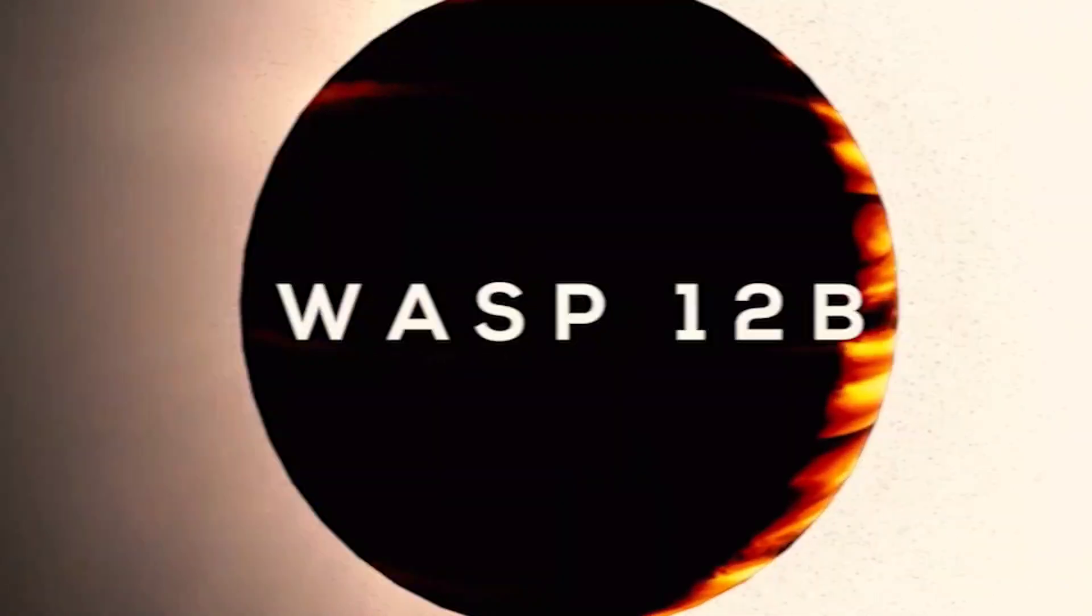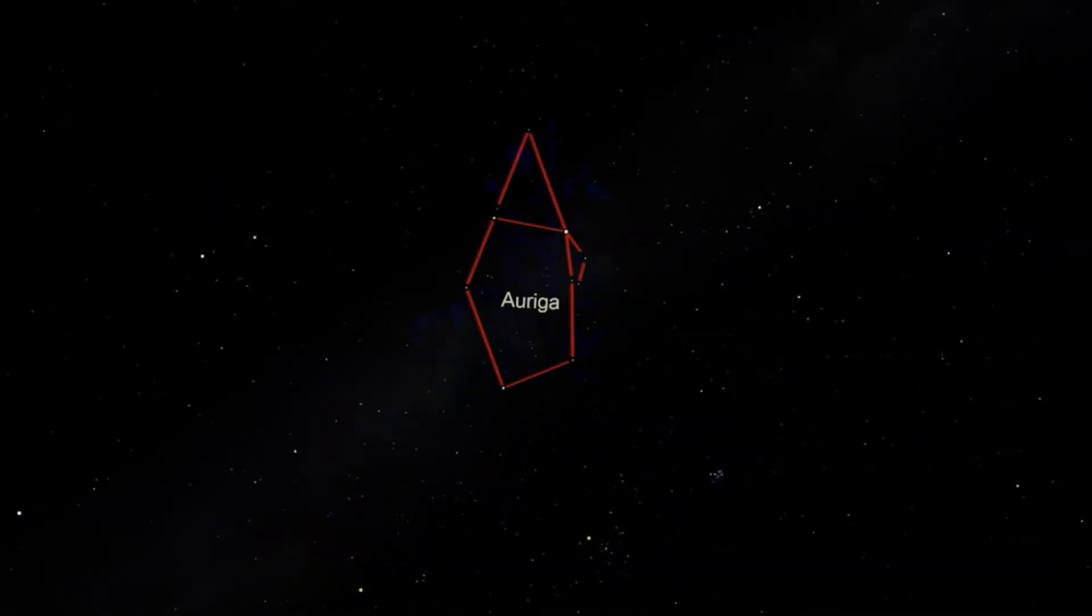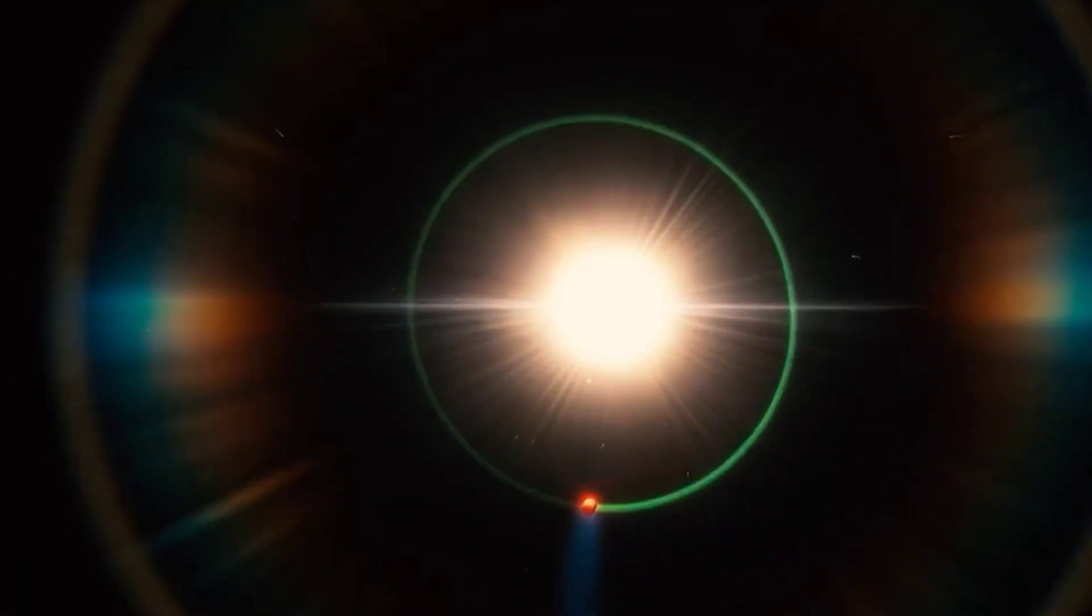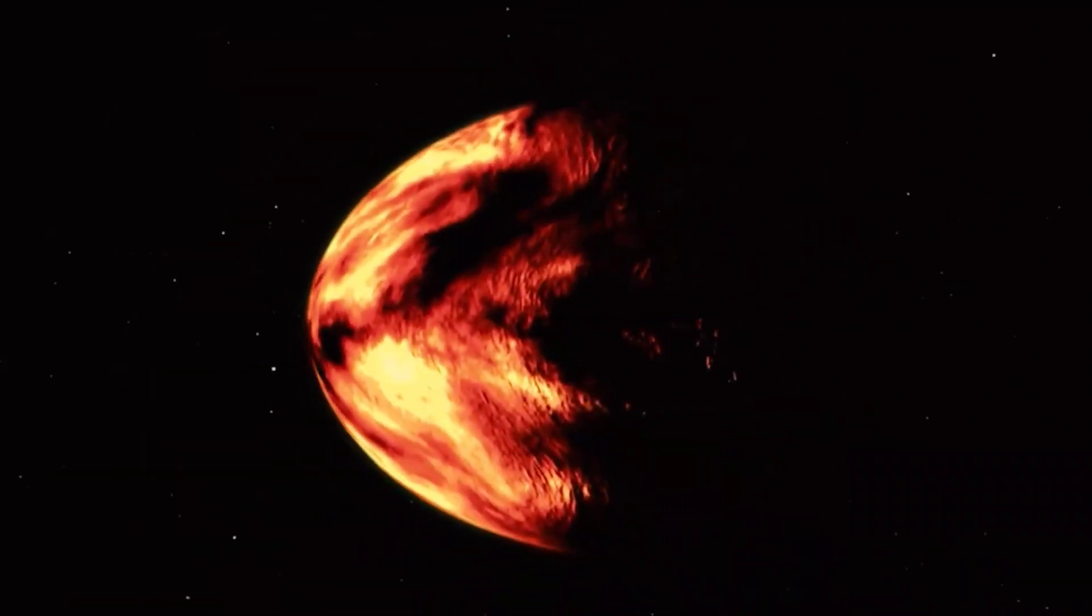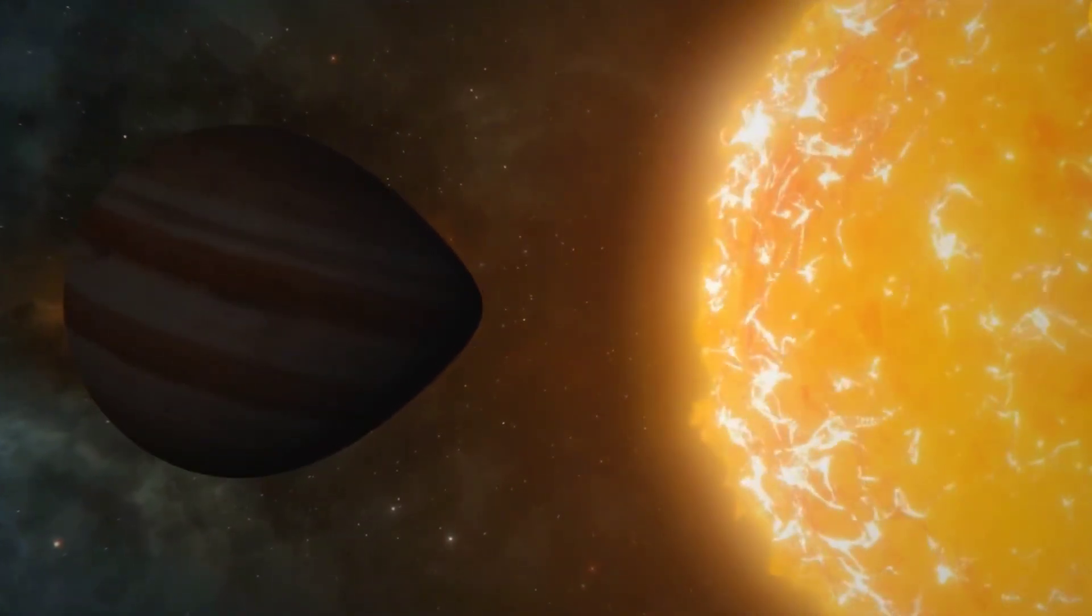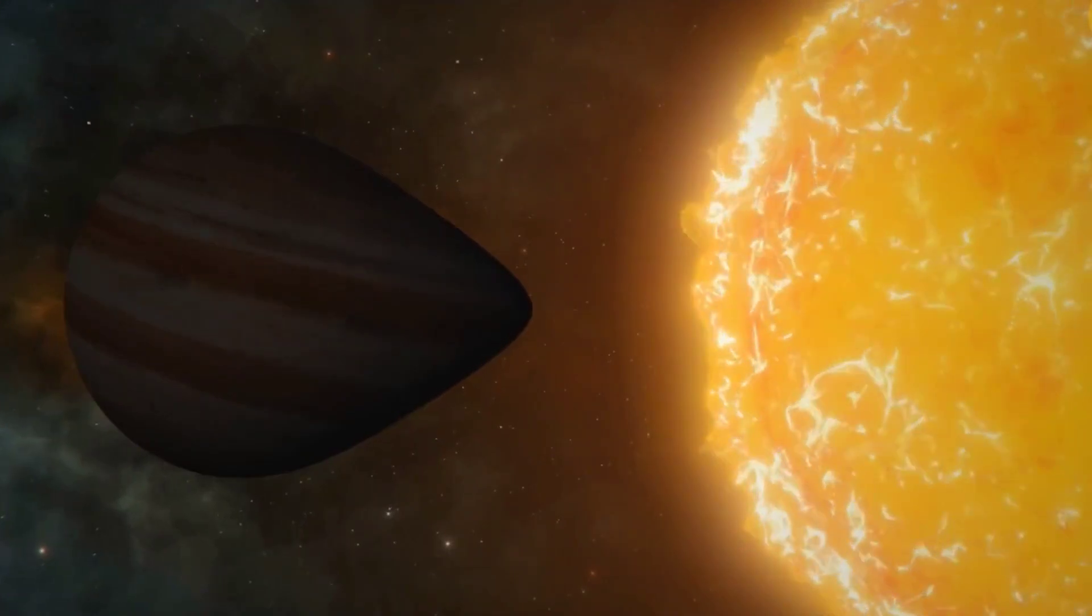Wasp-12b is an exoplanet located in the Auriga constellation, orbiting a star that is roughly 1,400 light-years away from Earth. The planet is notorious for its exceptionally severe conditions, making it one of the most intimidating objects in the known universe.